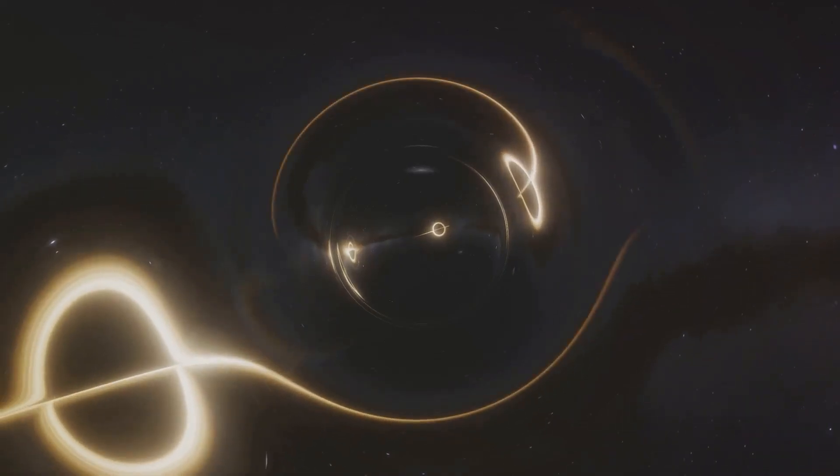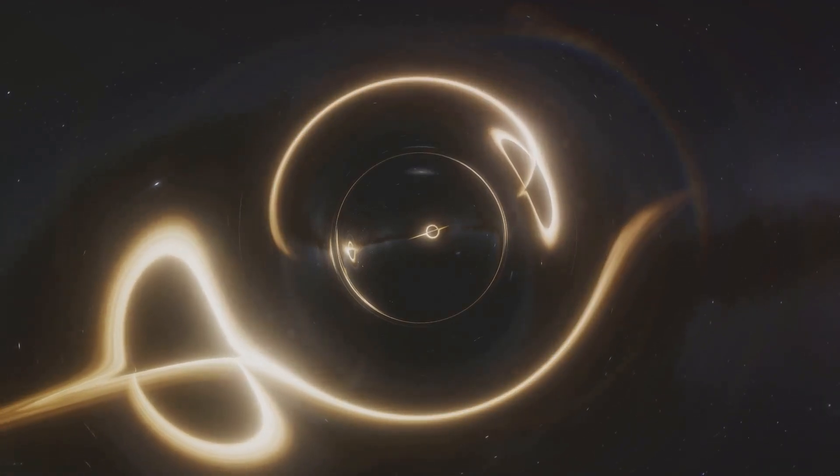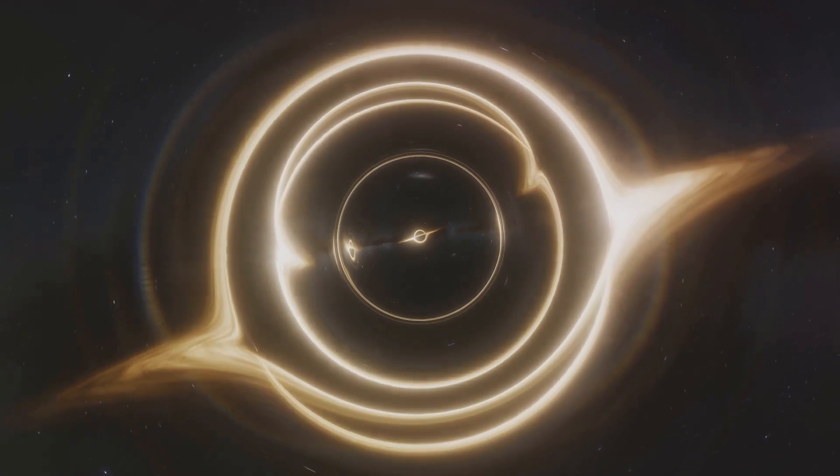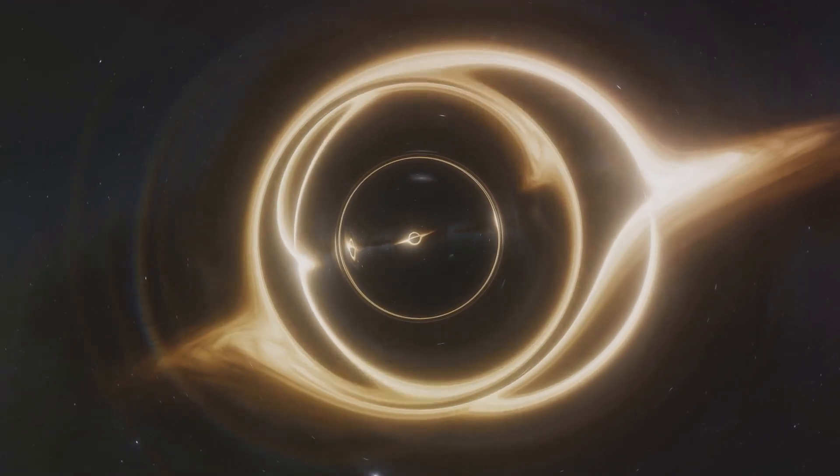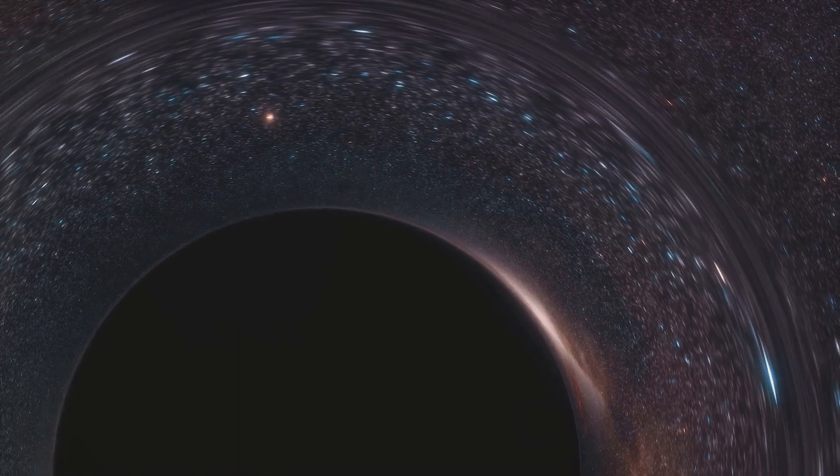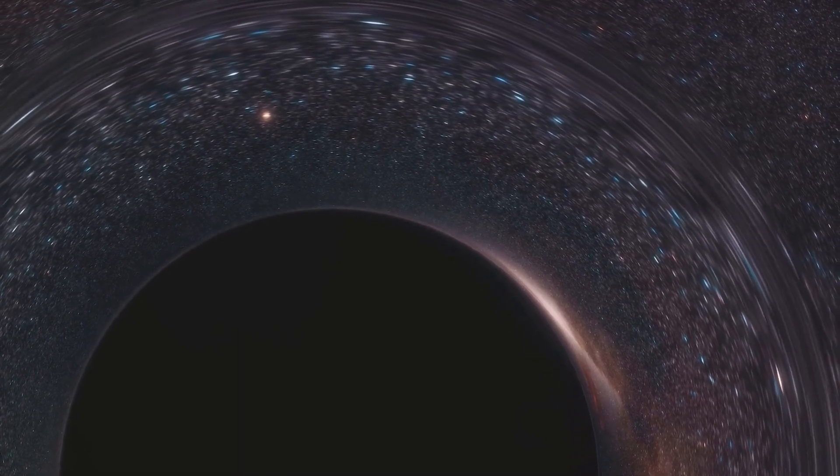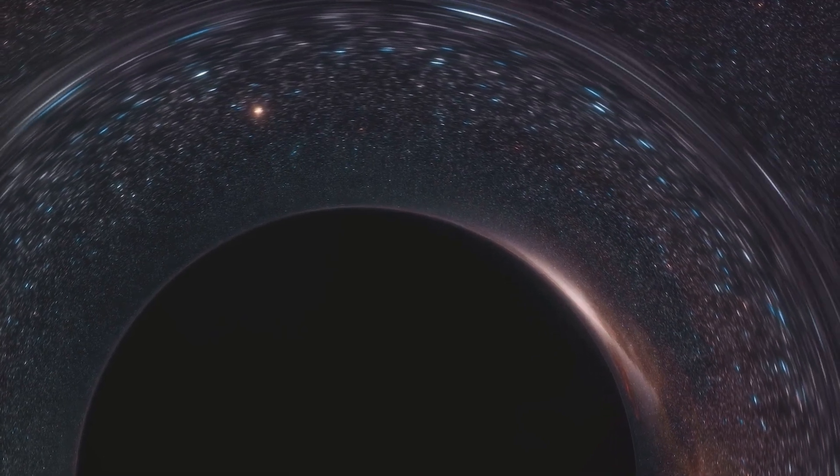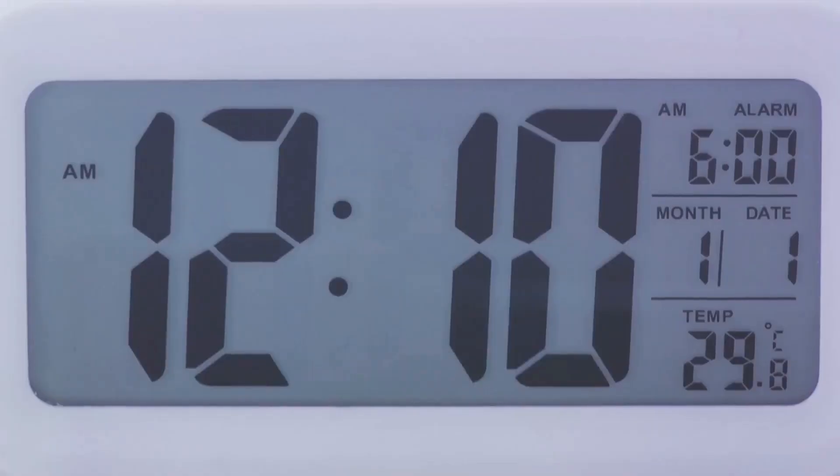Time dilation means that time can appear to move slower or faster depending on your speed or your position in a gravitational field. For instance, if you were to travel near the speed of light, time would seem to slow down for you compared to someone who was stationary. Similarly, if you were near a massive object with a strong gravitational pull, like a black hole, time would also seem to slow down.